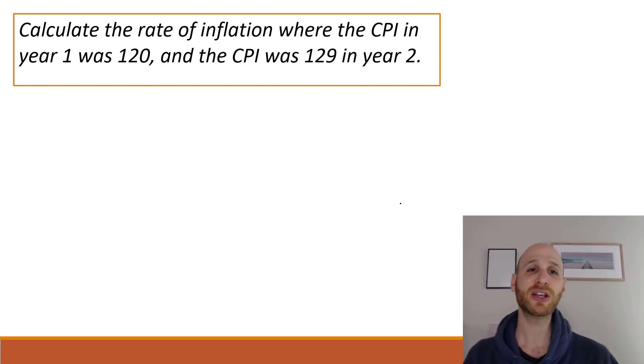Here's the question. Calculate the rate of inflation where the CPI in year one was 120, and the CPI was 129 in year two. Okay, cool. I think we can manage this. I like to start by writing out the formulas. It helps me get the process down pat.